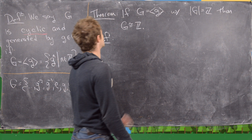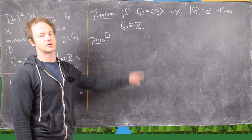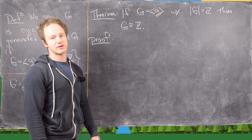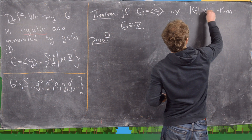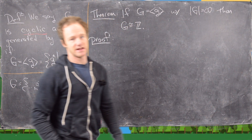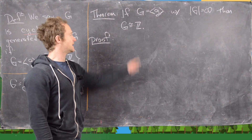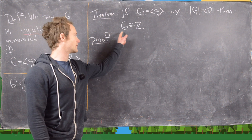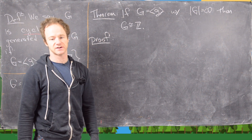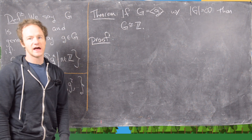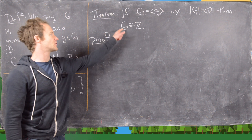The first theorem we want to look at is: if G is a cyclic group generated by little g and the number of elements in G is infinite, then there's only one choice for what that cyclic group is — it's the integers itself. We write that as G is isomorphic to the additive group of integers. We'll prove this by constructing an isomorphism between the additive group of integers and G.